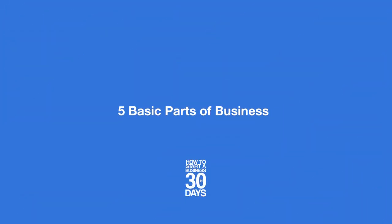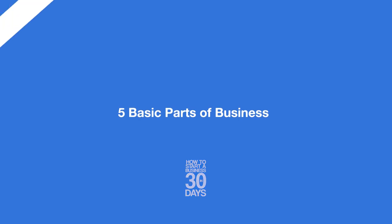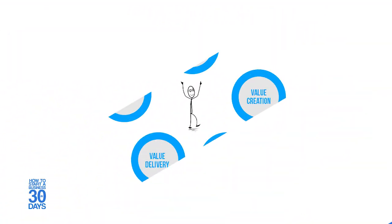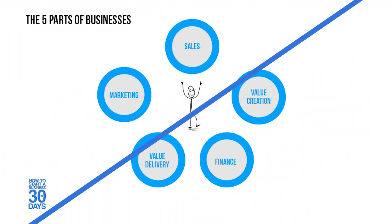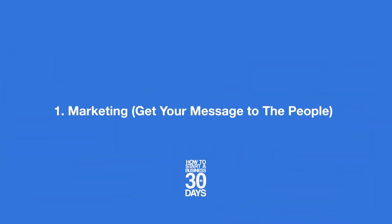What I want to talk about in this video is the five basic parts of a business. Every business has different components and people try to make this overly complex, but I'm about to explain this very simply. These five parts are interchangeable — there's no particular order of importance; they are all equally important.